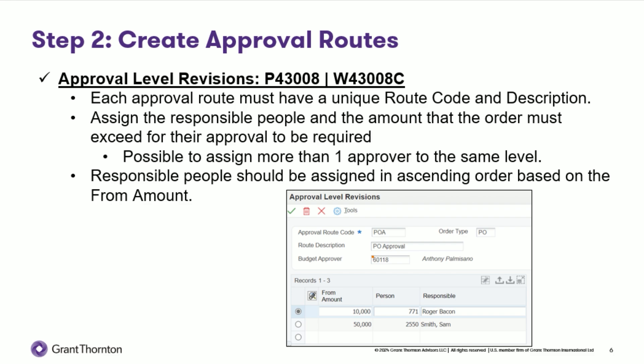Some additional recommendations: there should not be the same approver at different amount levels in one approval route, and there should not be more than one approver at the same level amount, because the first approver listed at that amount will receive all email notifications while the second person will be left out of the process. Also, if the originator of the order is on the approval route and there is a higher approver on the route, the order is sent to that approver, bypassing lower approvers, regardless of the PO amount. If there is no one higher on the route than the originator, the order will be automatically approved.